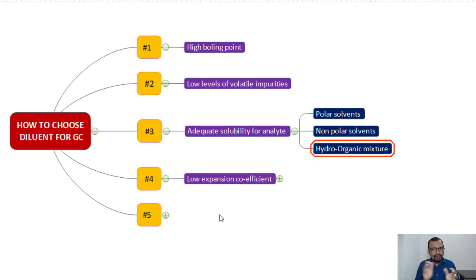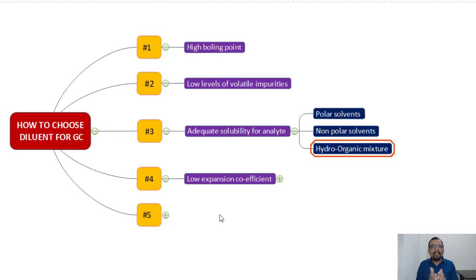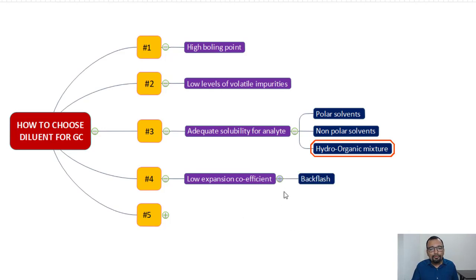You can also work on reducing the injection volume so that the expanded vaporized volume can be accommodated inside the glass liner. This issue generally happens with splitless liners. Be careful to understand whether the reason for carryover is due to backflash.